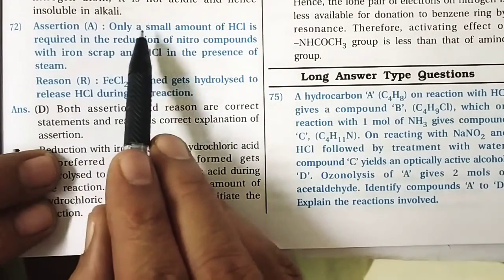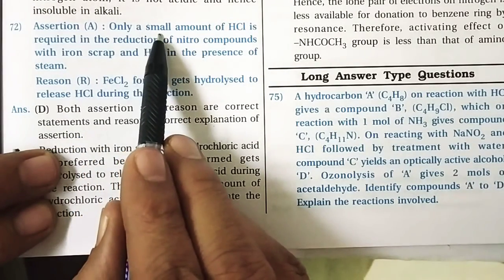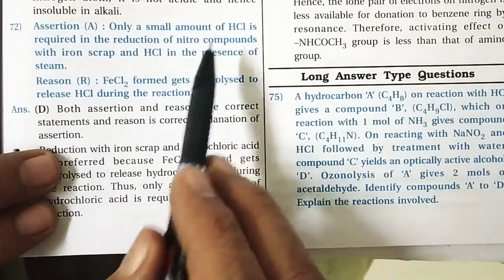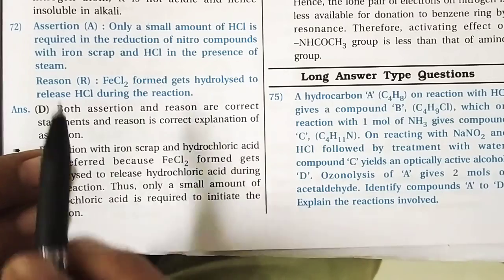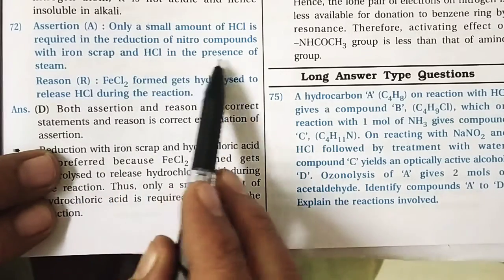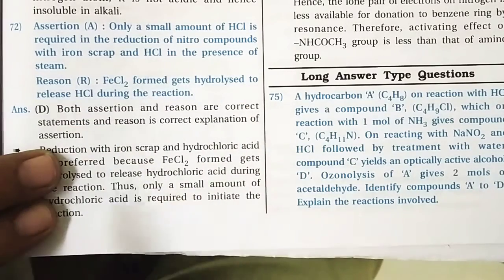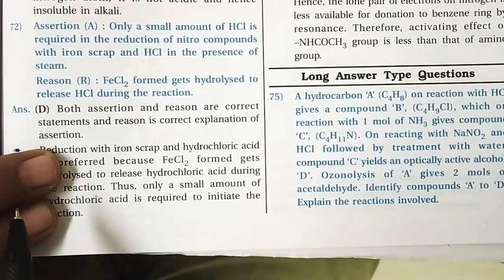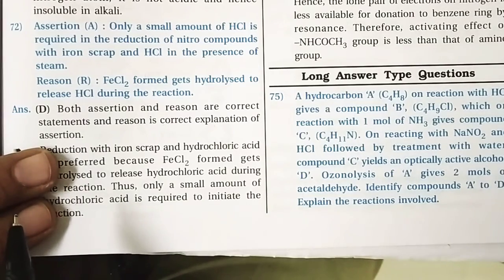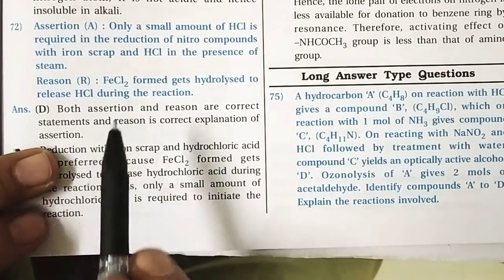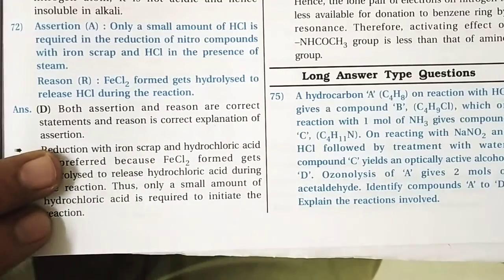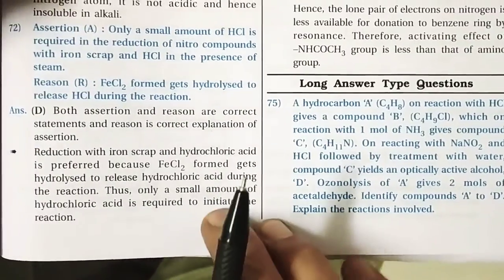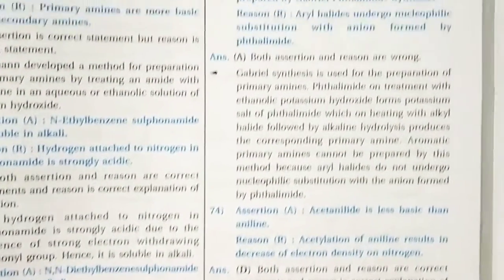Question 72: Only a small amount of hydrochloric acid is required in the reduction of nitro compounds with iron scrap in the presence of steam. Both the assertion and reason are correct, and the reason is the correct explanation.